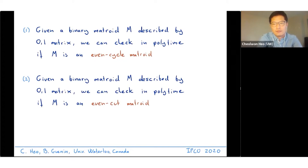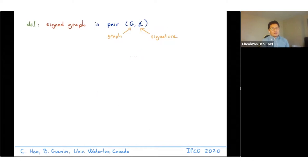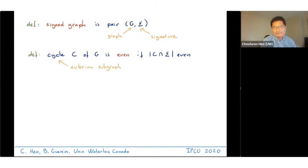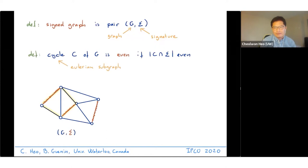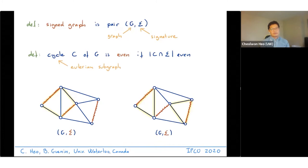First we introduce the notion of a signed graph. A signed graph is a pair G sigma where G is a graph and sigma is a subset of the edges called the signature. A cycle of G is even if it contains an even number of edges in the signature, where by a cycle we mean an Eulerian subgraph. Here is an example: the red edges correspond to edges in the signature, and the highlighted yellow edges form an even cycle. The union of two yellow triangles also corresponds to an even cycle.